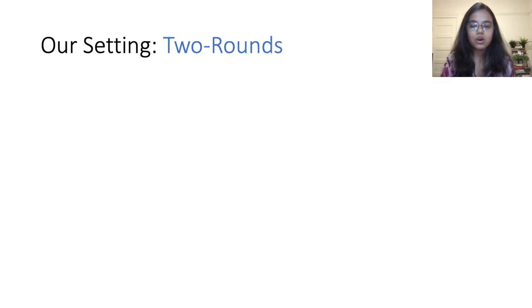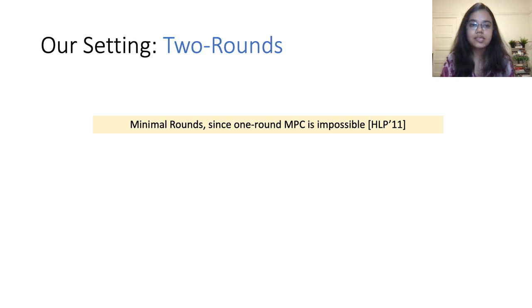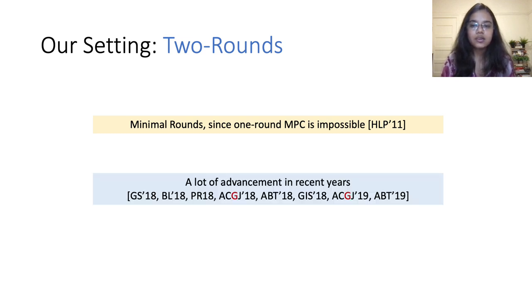In this work, our goal is to examine the role of these communication models in two-round MPC. Two rounds in the MPC setting are clearly minimal since one-round MPC is known to be impossible. In recent years, a series of works have made significant advances in the two-round MPC setting, managing to establish feasibility of general computation relying essentially on minimal computational assumptions.